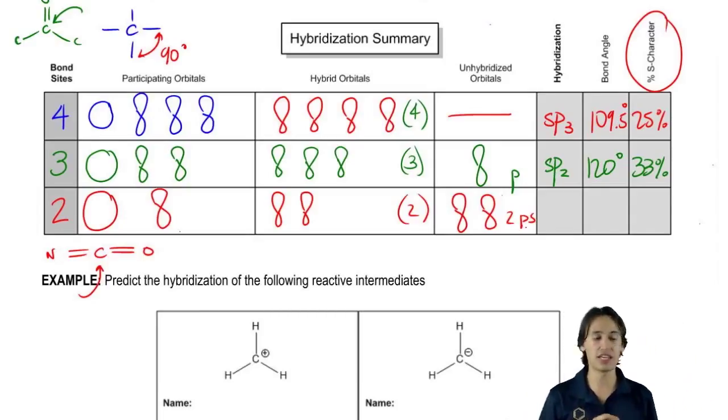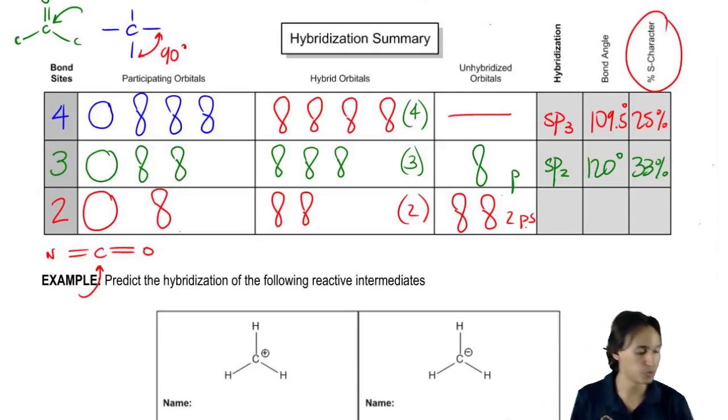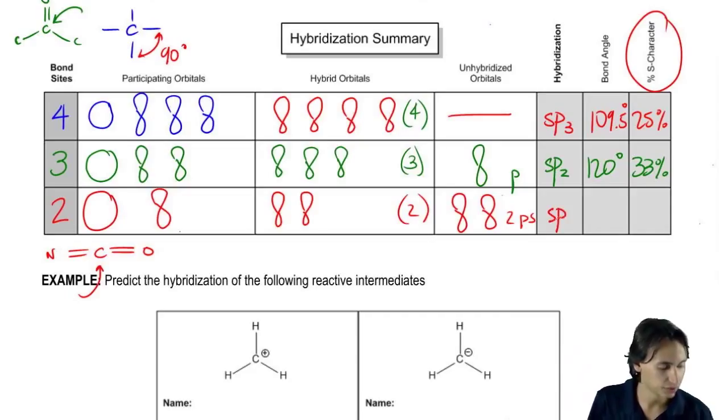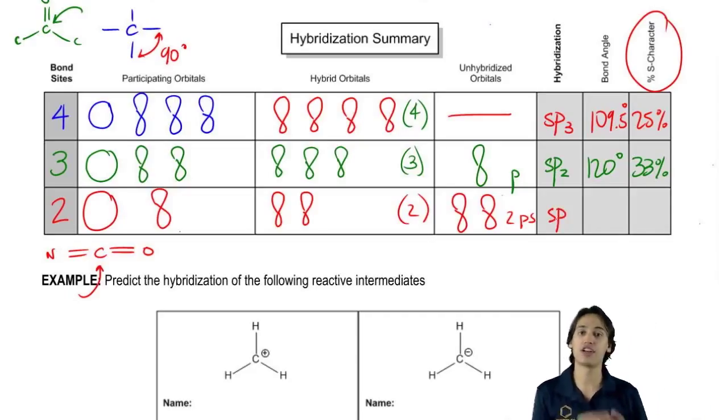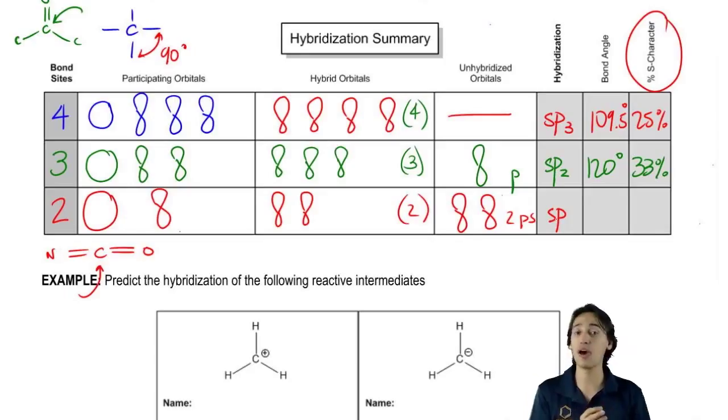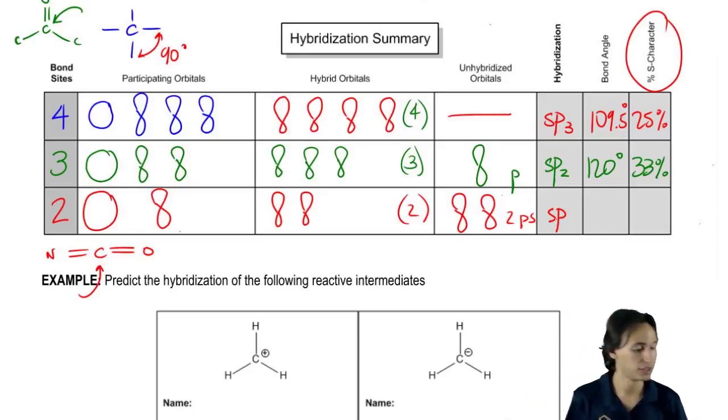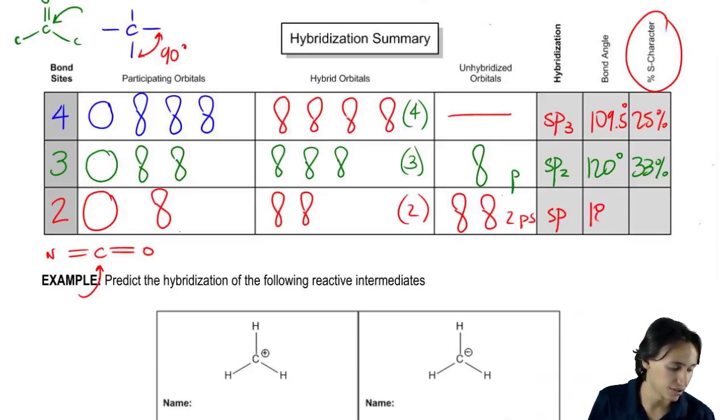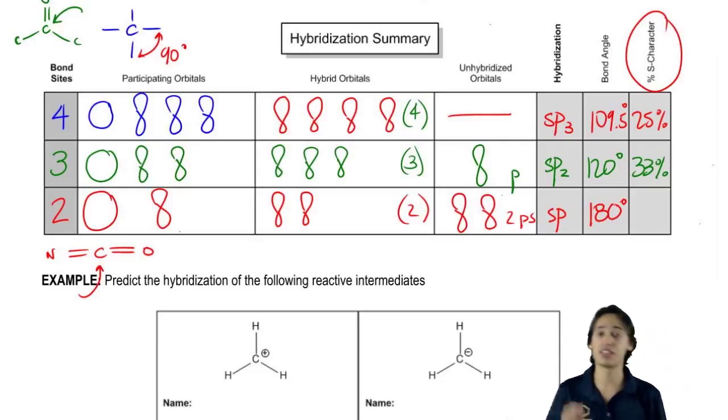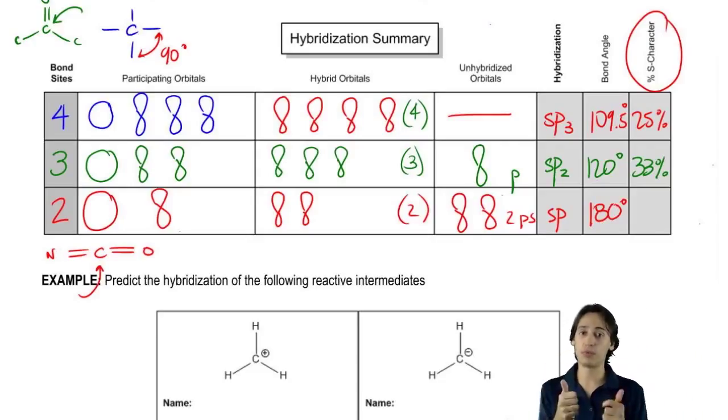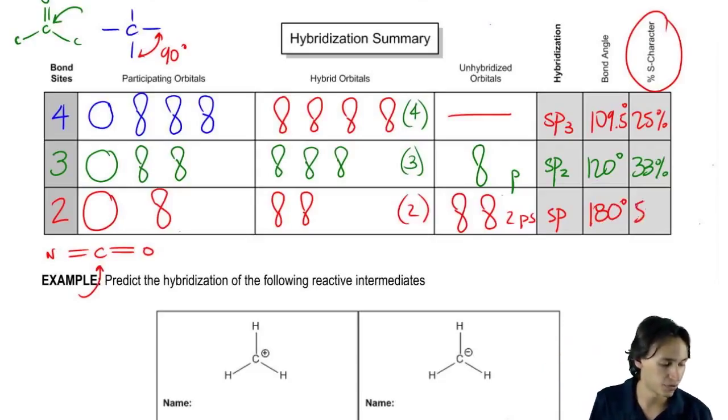So now I'm going to put here two p's. So if I were to go ahead and say, what type of hybrid orbitals are these? Well, it would just be a combination of what's coming together, so this would be called sp. And the furthest that two things can get apart from each other, because remember now I only have two things repelling, is 180 degrees. And since I'm combining one s and one p, the s character is going to be 50%.